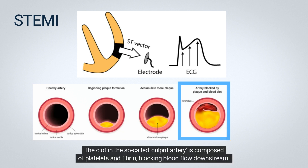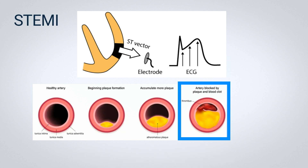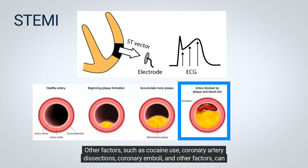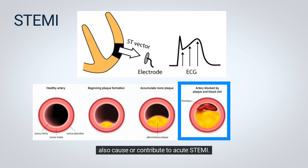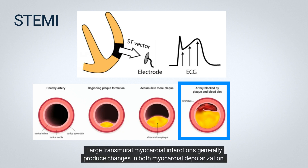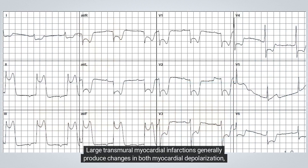The clot in the so-called culprit artery is composed of platelets and fibrin, blocking blood flow downstream. Other factors such as cocaine use, coronary artery dissections, coronary emboli, and other factors can also cause or contribute to acute STEMI.